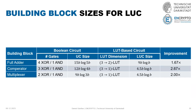We have some building blocks, and most or all of these functions can be reduced to these building blocks. The building blocks are basically full adder, comparator, and multiplexer. All of these building blocks have three inputs and one output, except for the full adder that has two outputs. These building blocks can implement many functionalities, and this is the reason why most functionalities can be implemented with three-input lookup tables.